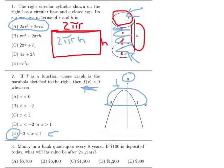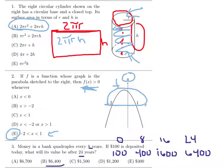And then the last one, money in the bank quadruples every 8 years. If $100 is deposited today, what will its value be after 24 years? Now, because 24 is a multiple of 8, we don't need to actually come up with an equation, just make a little list. So this is your 0, this is when you're initially putting in the money. After 8 years, then after 16, then after 24, how much money are you going to have? You're quadrupling every time. So quadruple once, and then again, and then again. So that's your answer.